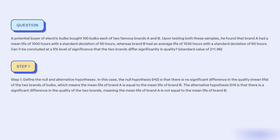Step 1: Define the null and alternative hypotheses. The null hypothesis H-0 is that there is no significant difference in the quality mean life of the two brands of bulbs, which means the mean life of brand A is equal to the mean life of brand B.